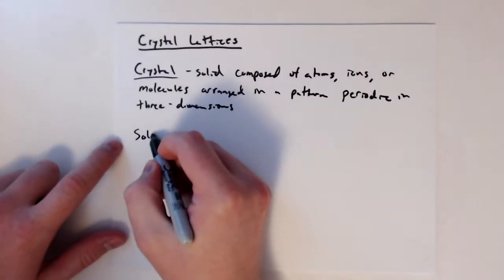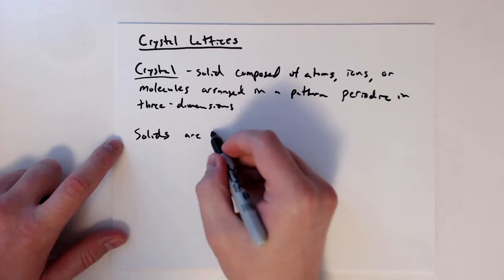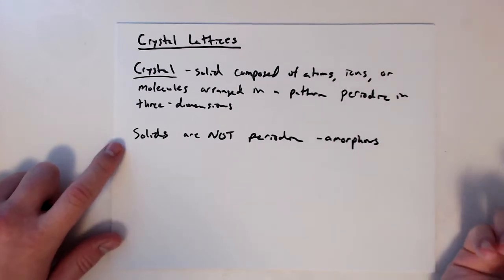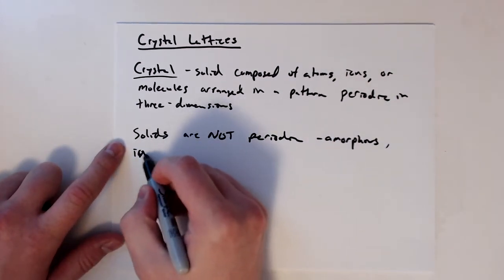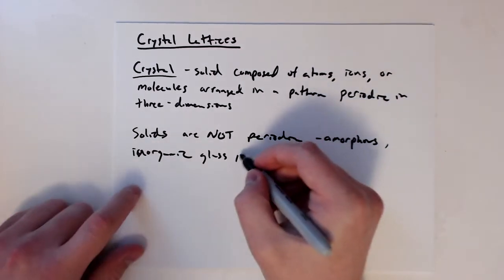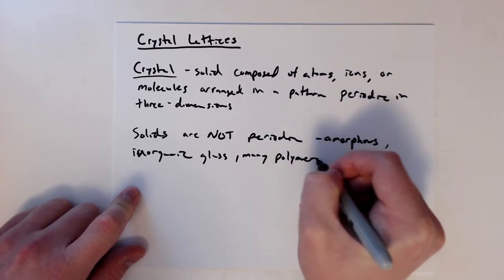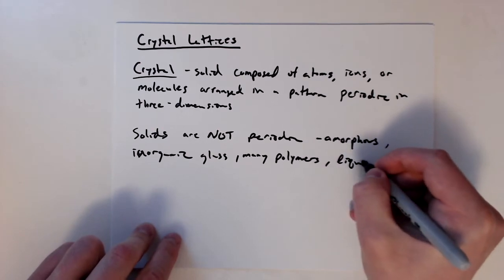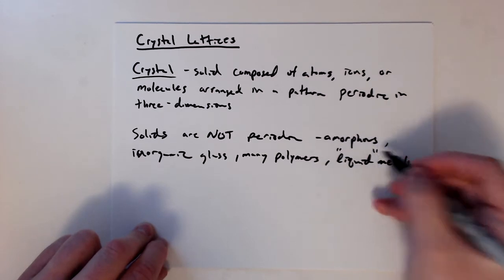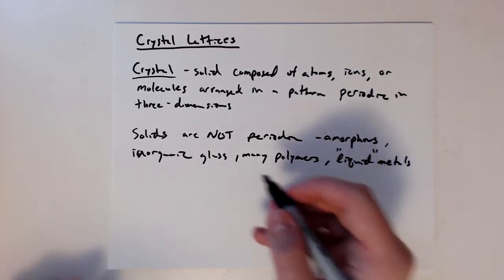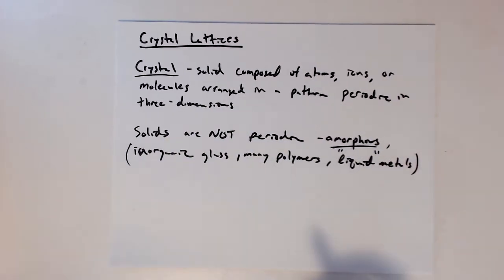We can also have solids composed of the same things but that are not periodic. Those are what we call amorphous materials. This could be inorganic glass — things like window glass — or organic glass, since many polymers have amorphous behavior. For the most part, all polymers will have some amorphous component. There are also things like liquid metals, which are solid metals that don't have that periodic nature, so they are also amorphous.